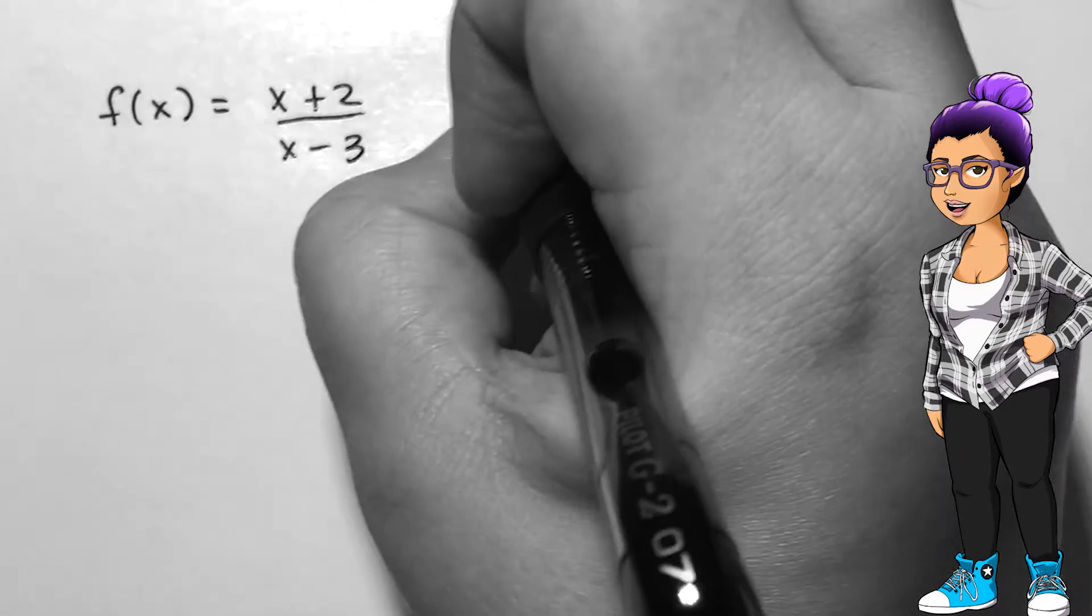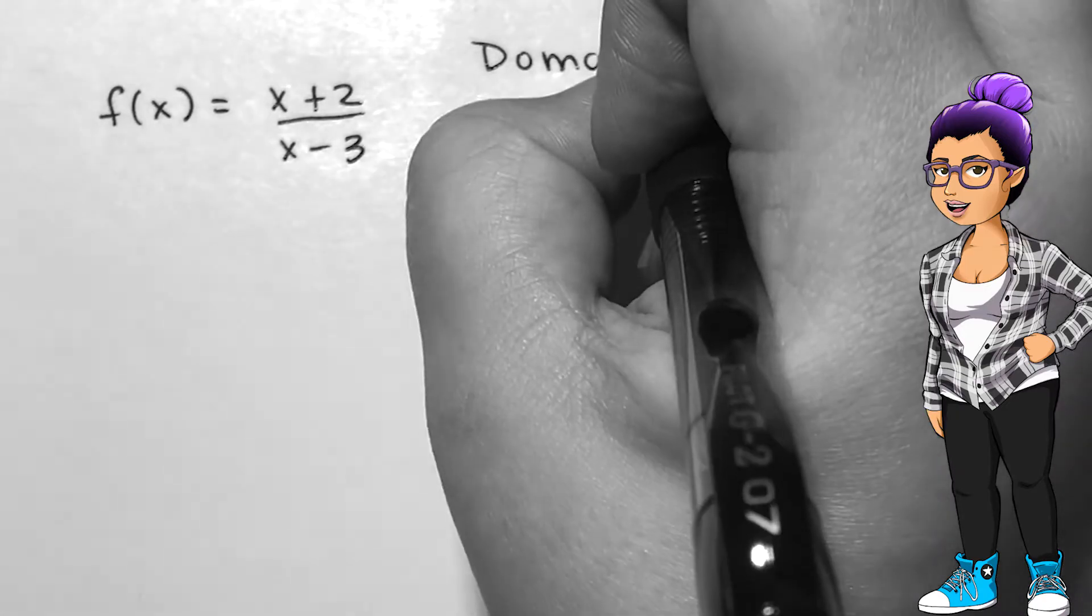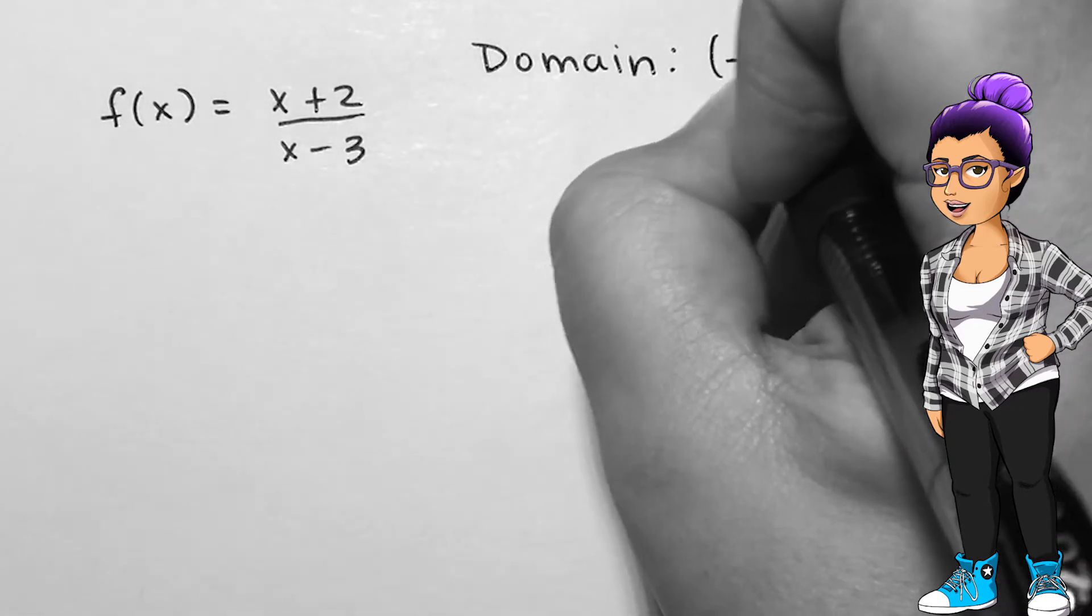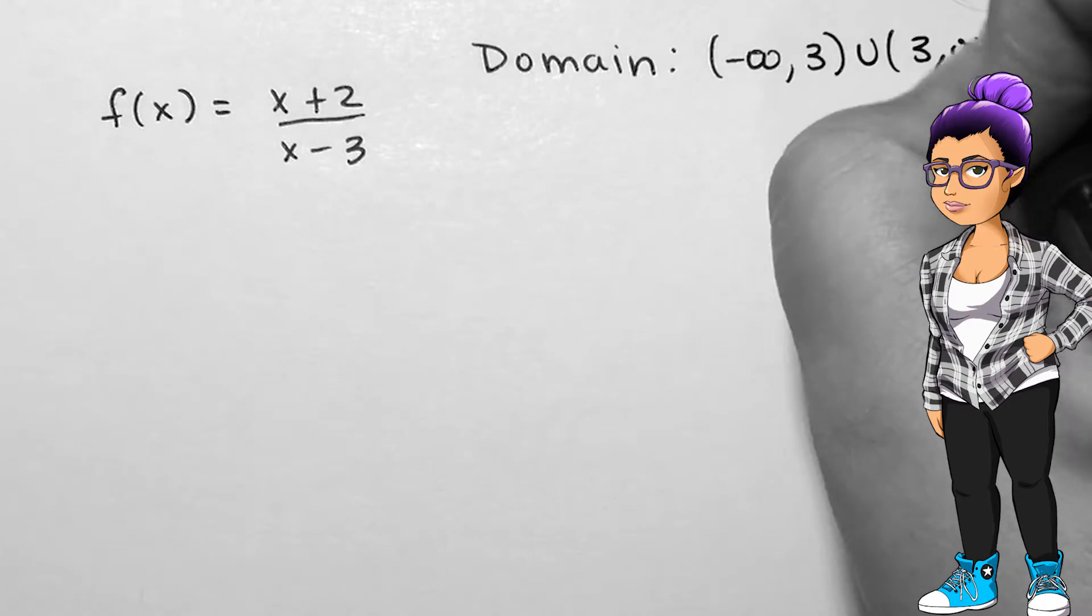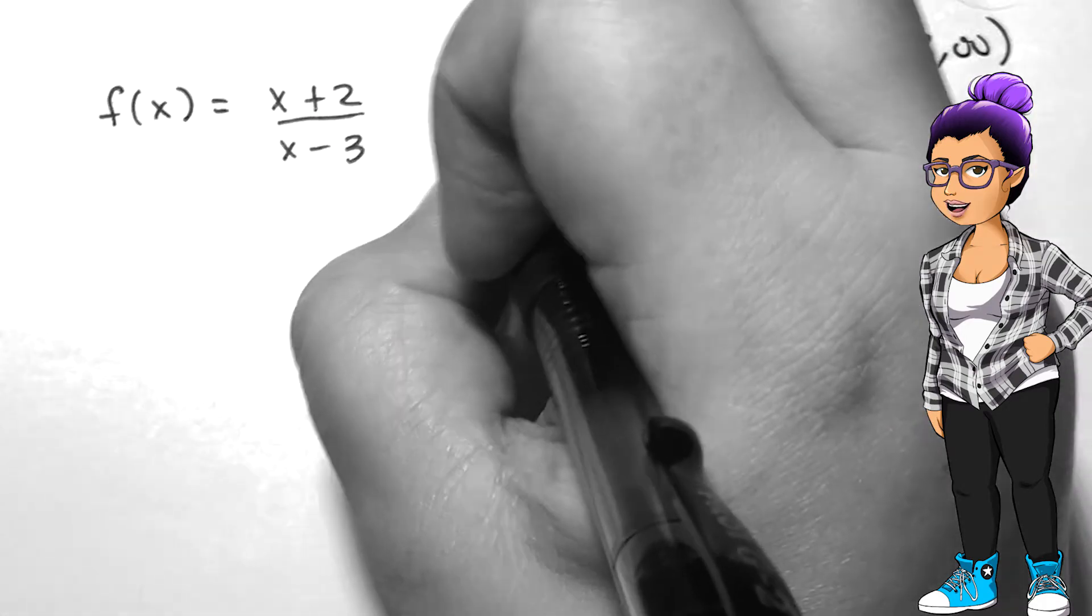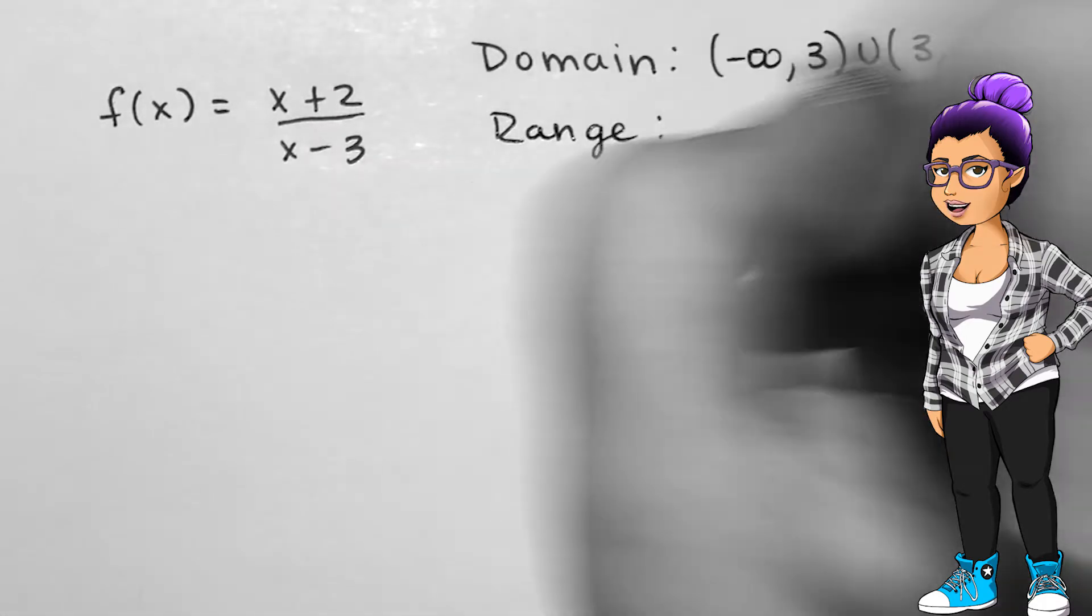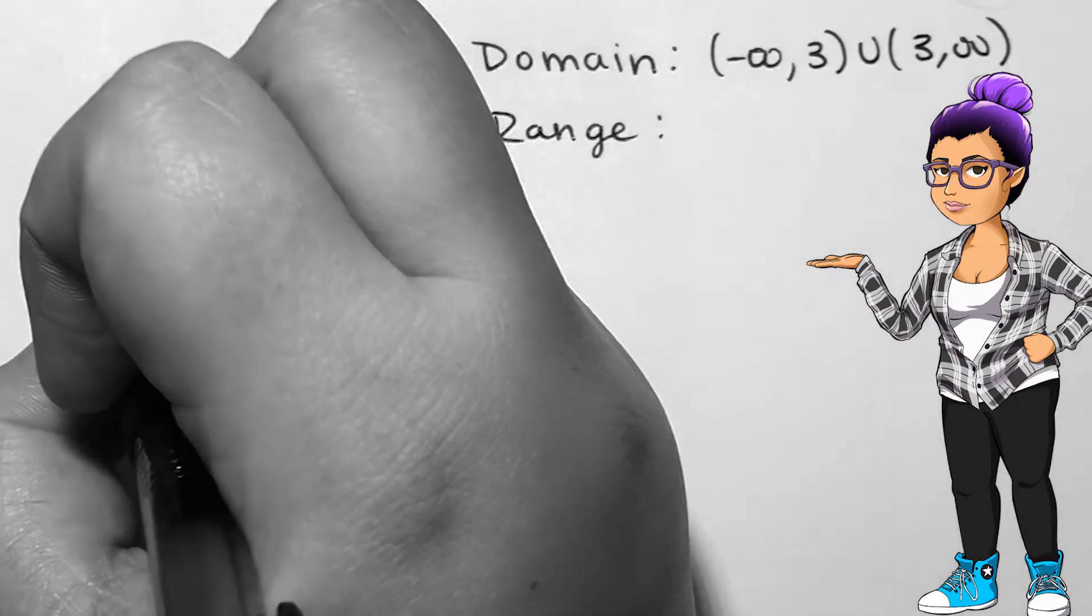The numerator looks like a transformation of the identity function, so it will not contribute to any domain restrictions. I know, though, that the denominator is not allowed to be 0. This means that x minus 3 cannot be 0, so x cannot be 3. The domain is all real numbers except 3.